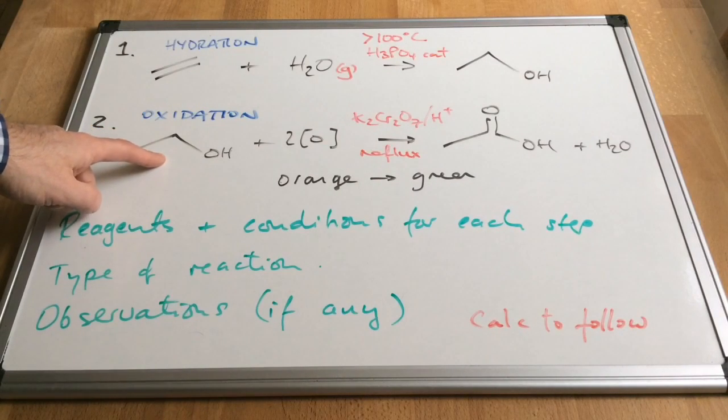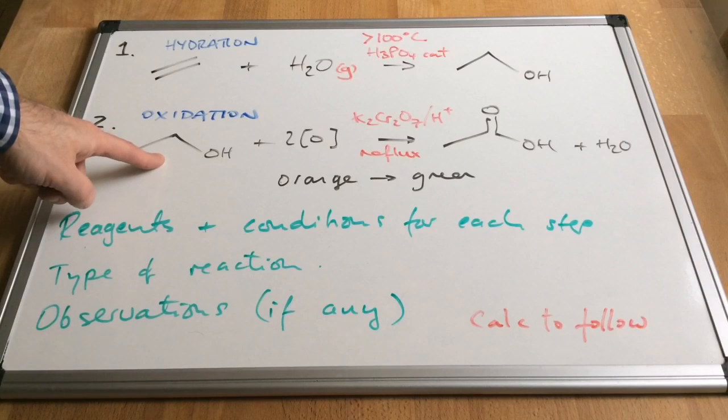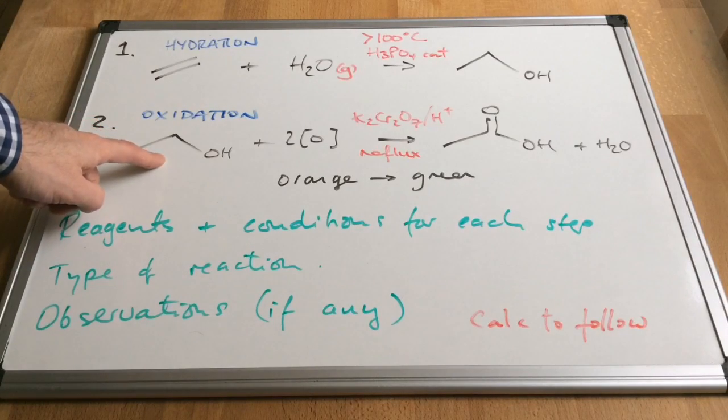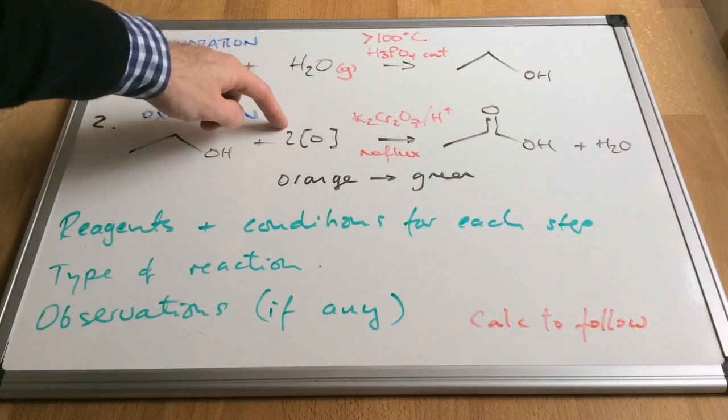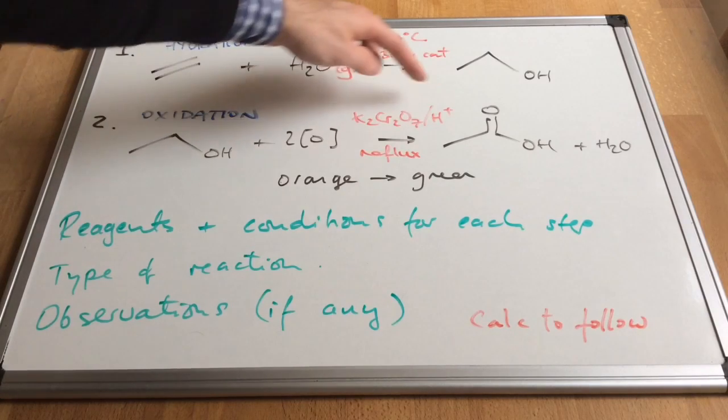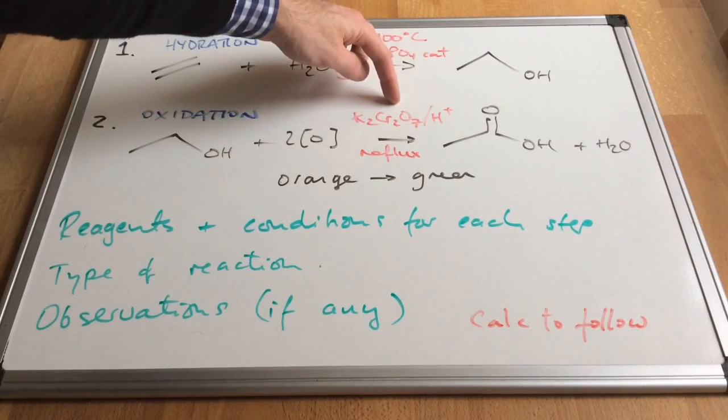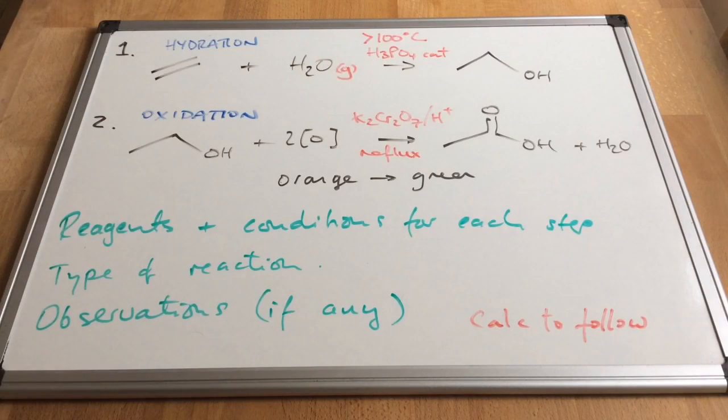Step two is the oxidation of the alcohol, the ethanol. We're going to completely oxidise this. Remember, primary alcohols can be oxidised twice. First of all, to an aldehyde. Second of all, to a carboxylic acid. So we need two moles of the oxidising agent. The oxidising agent itself is acidified potassium dichromate. And that would need to be carried out under reflux to make sure you get both oxidations.